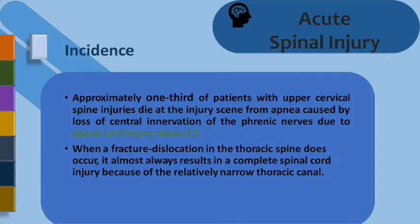Approximately one-third of patients with upper cervical spine injuries die at the injury scene because of involvement of the phrenic nerve. When fracture dislocation occurs in the thoracic spine, it almost always leads to complete spinal cord injury. We will talk about what is complete and what is incomplete spinal cord injury, what is the neurological level, and what is the sensory level in subsequent slides.